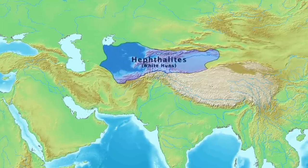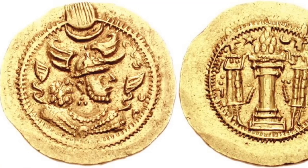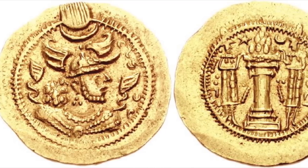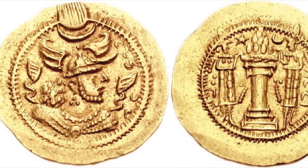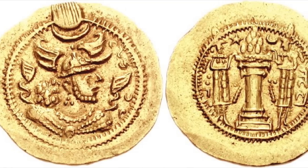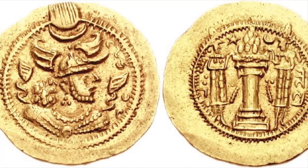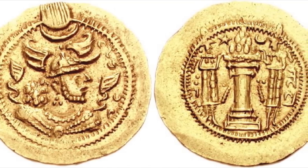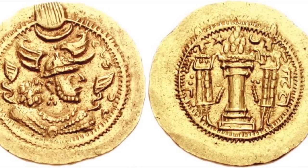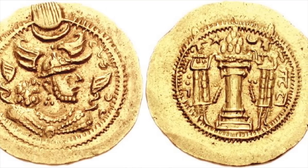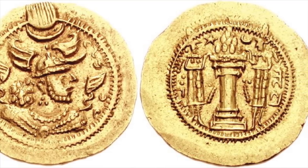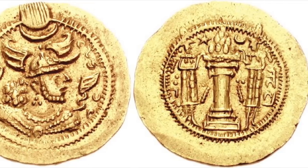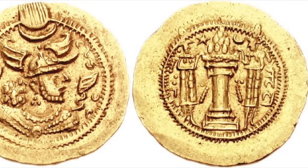The Persian Shah Peroz was defeated by the Hephthalites and captured, and he then had to be ransomed by the Roman Emperor Zeno. Afterwards, he was defeated again in 484, and the Sasanian Empire entered into a tributary status with the Hephthalites — just as they had been with the Kidarites in 453. For several decades after this point, the Persian Shahs essentially relied on Hephthalite support for their rule.